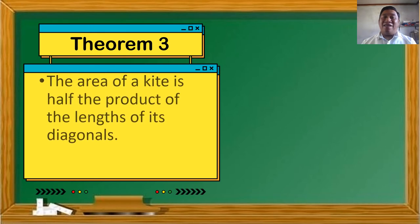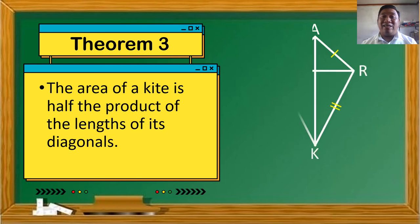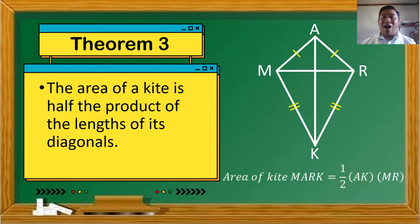Theorem Number 3: The area of a kite is half the product of the lengths of its diagonals. To find the area, we multiply the measures of the two diagonals and then divide by 2. For kite M-A-R-K with diagonals A-K and M-R, the formula is: Area = one-half times the measure of diagonal A-K times the measure of diagonal M-R.